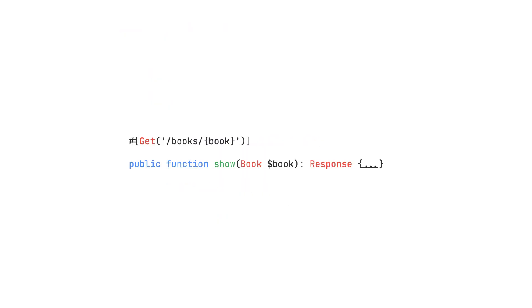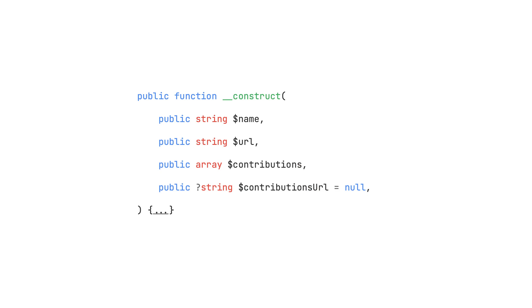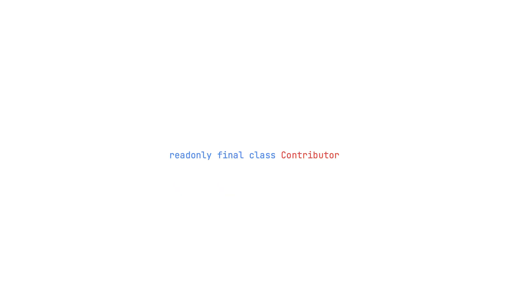You know all the new features and syntax we got over the past decade — enums, attributes, property promotion, read-only, arrow functions. The list goes on.